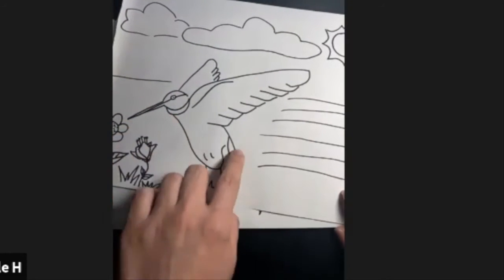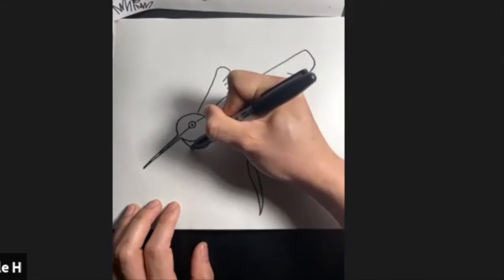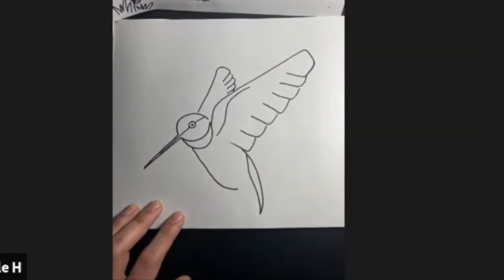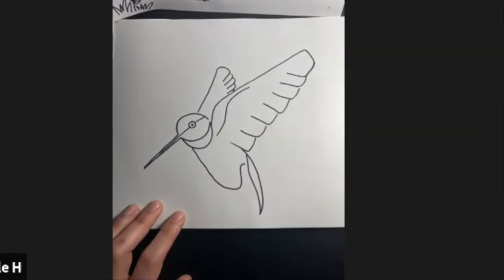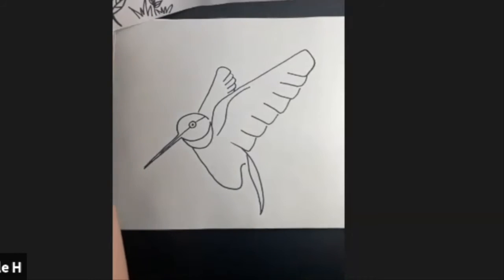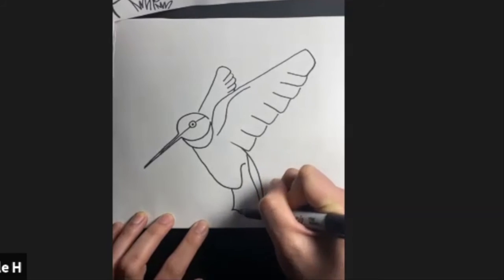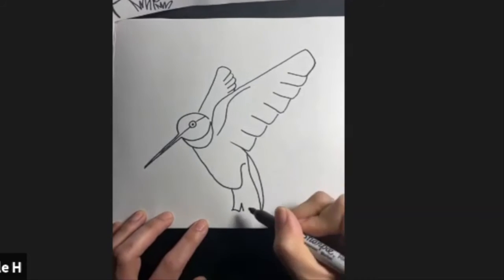So right here, all the way down. Kind of like a letter S from here. Next, for the tail of the hummingbird. Do the L shape down here. Inverted B. Inverted B. In line.